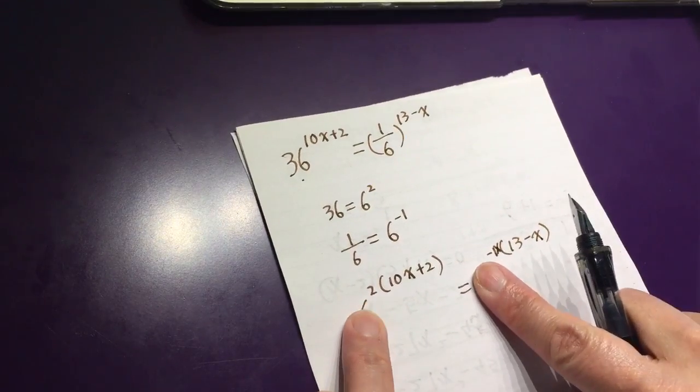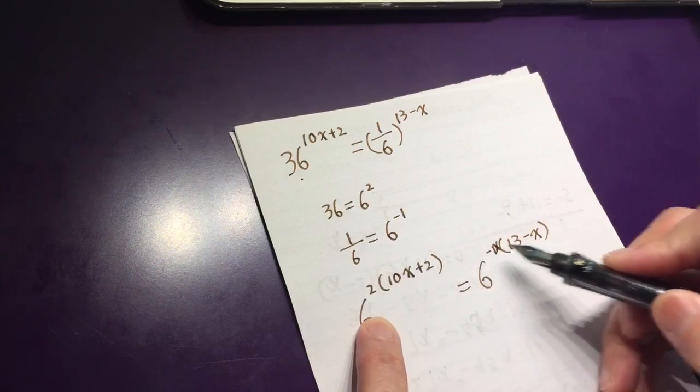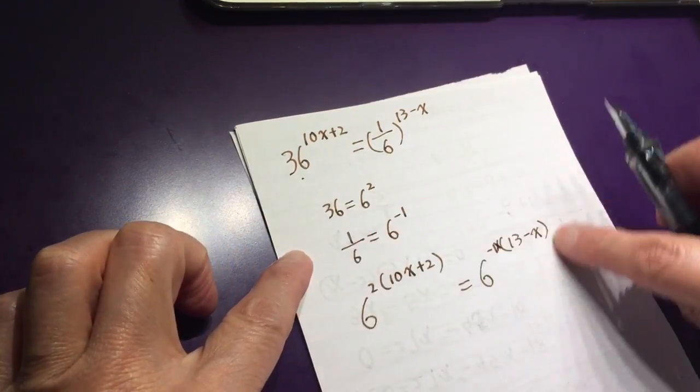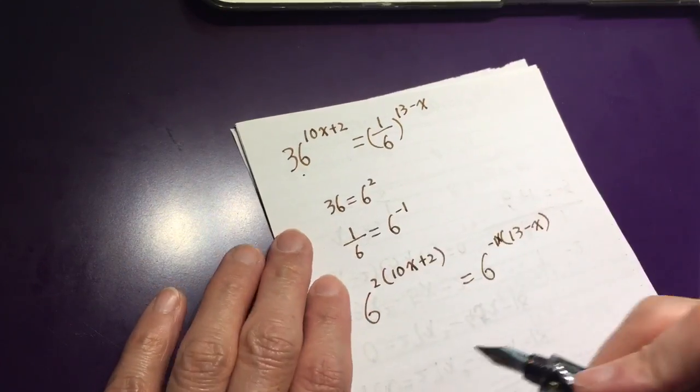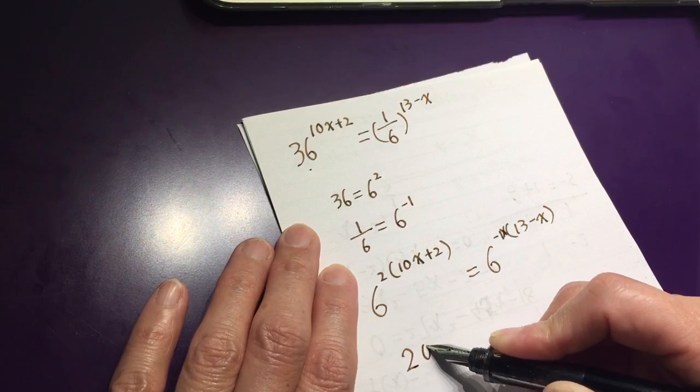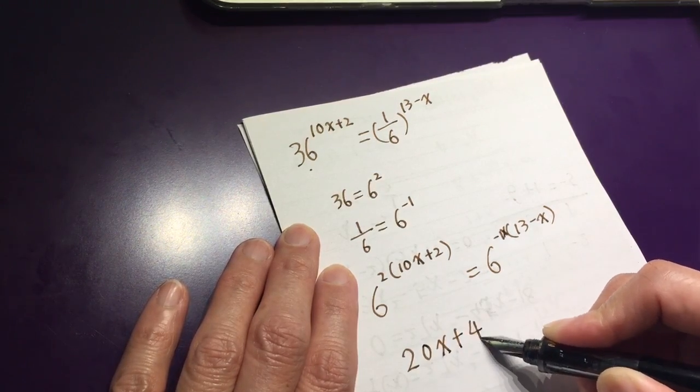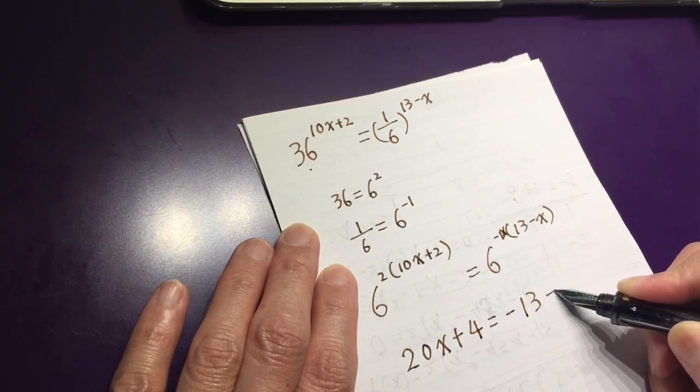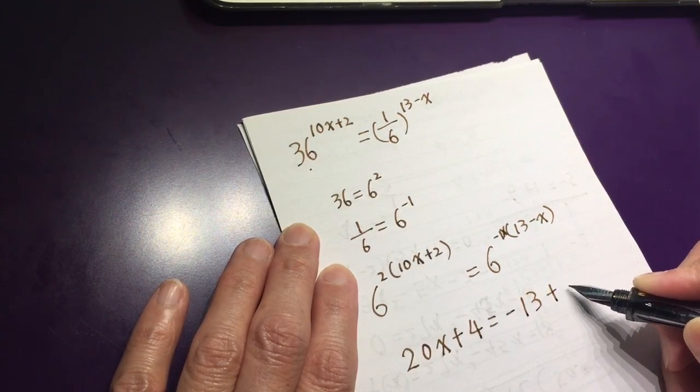So, same base. The power should be the same. They have the same power. 20x plus 4 equals negative 13 plus x.